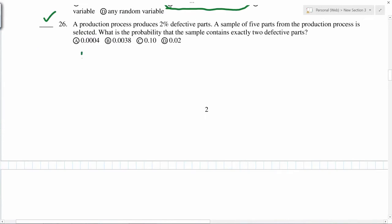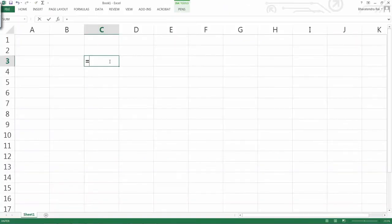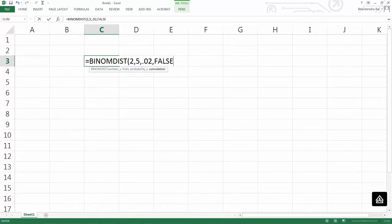So p is given 0.02, n is given, and what is the probability that sample contains exactly two defectives? Probability of x equals 2. X is 2, sample size is 5, and probability is 0.02. Because we are calculating exactly at 2, we say false. So we get 0.0037.